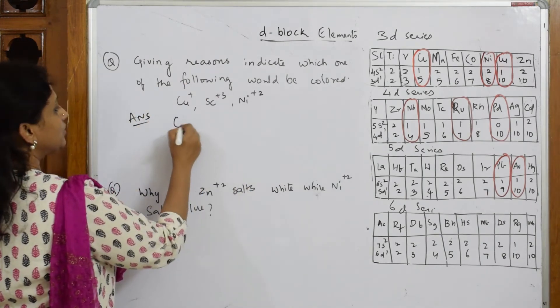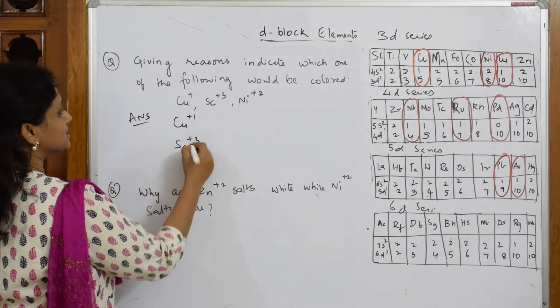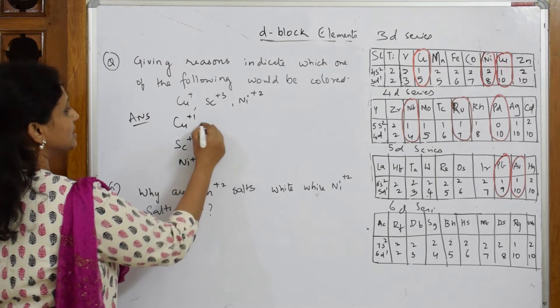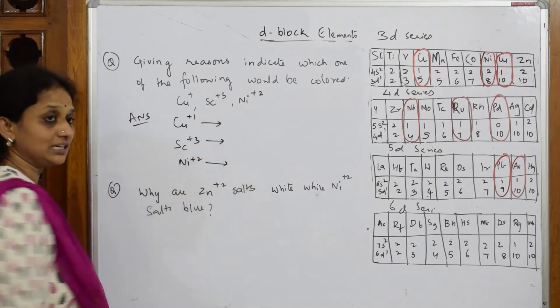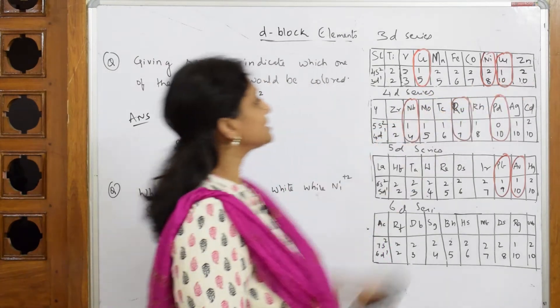You have Cu+, Sc3+, Ni2+. Let us write the configuration and take out the electron. First for copper plus one, copper is here so it is 3d10...